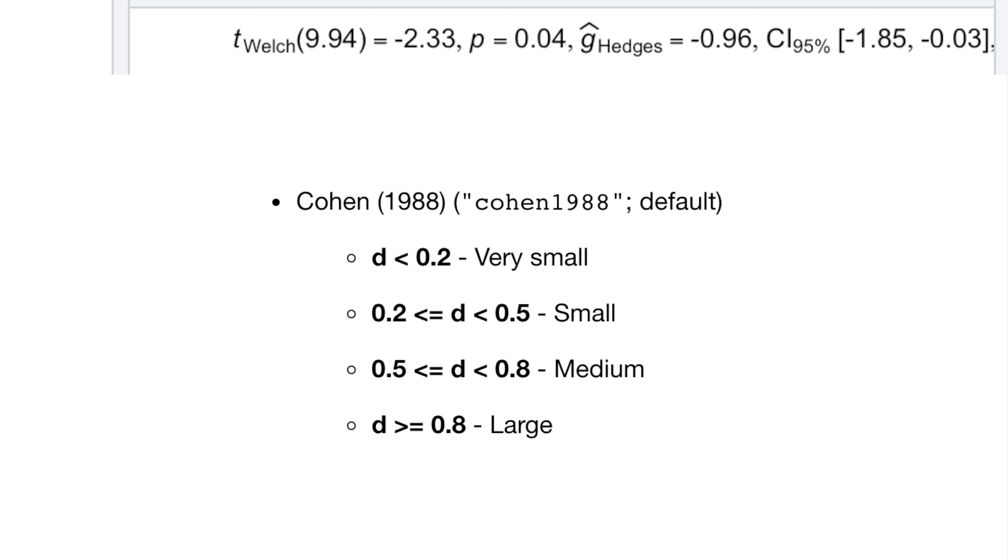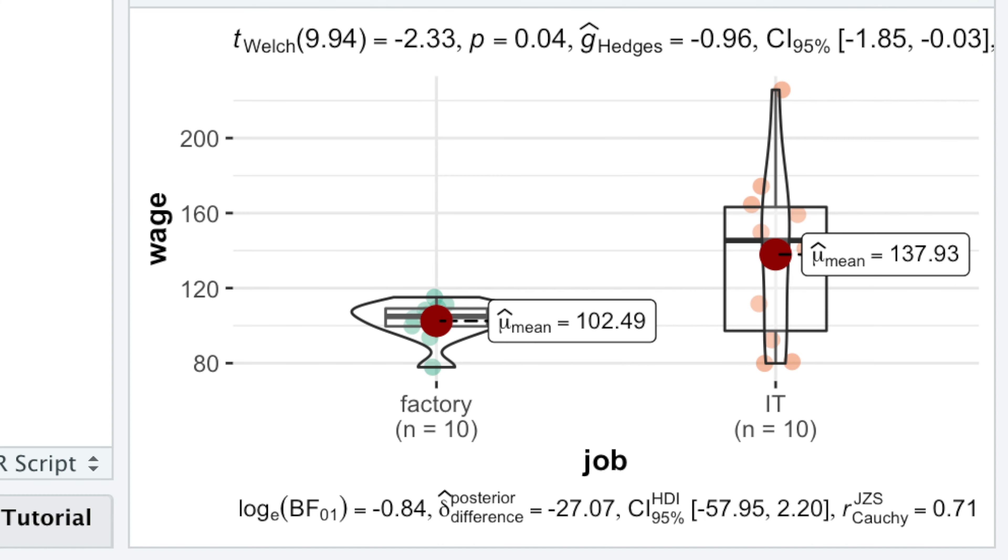Hedges g is interpreted in the same way as Cohen's D effect size, but outperforms Cohen's D for small samples, like in our example. Our effect size of minus 0.96 is large and tells us that the difference of $35,000 is literally large.